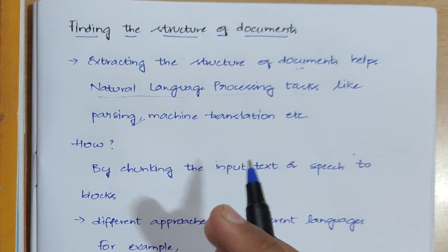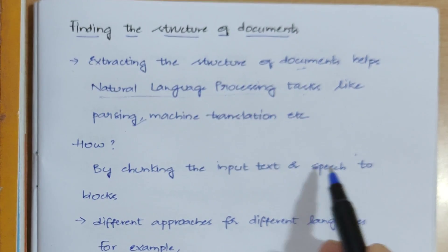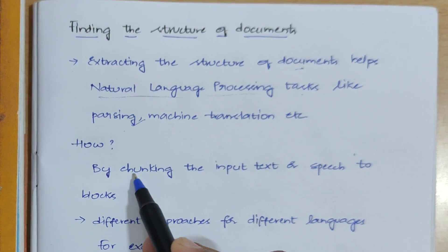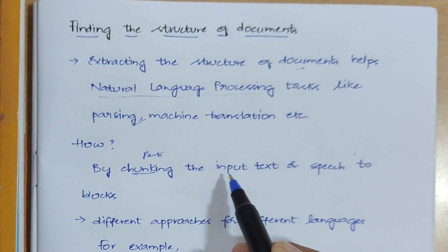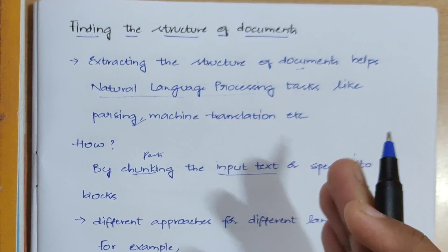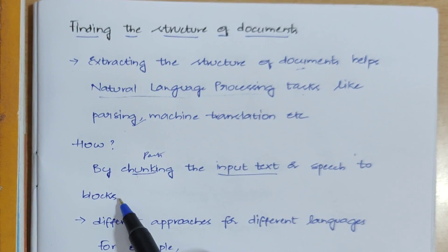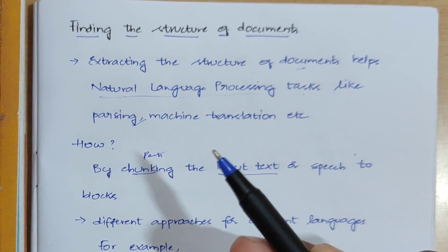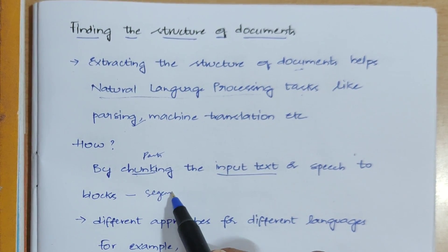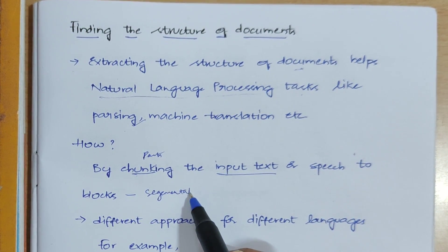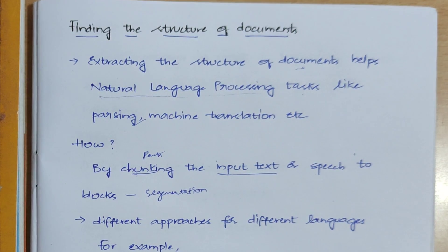There is one approach to finding the structure of documents: checking the input text or speech by dividing it into blocks or parts. You are dividing the input text into parts so that you can find the structure of the documents. This process is called segmentation — dividing some input text into parts.